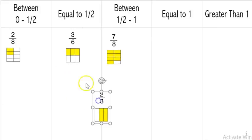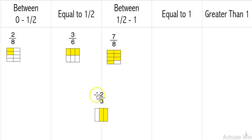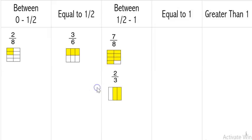Our next one is two-thirds. I see that it has quite a bit of yellow — almost all of it. With a denominator of three, it's hard to find an exact half, but one plus one is two, so I'd need one and a half to be equal to a half. Since two is more than that, two-thirds is between one half and one whole.